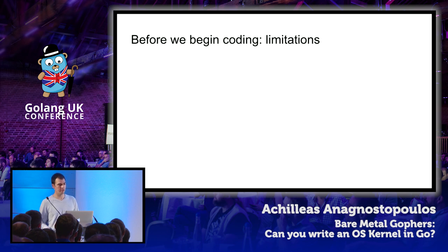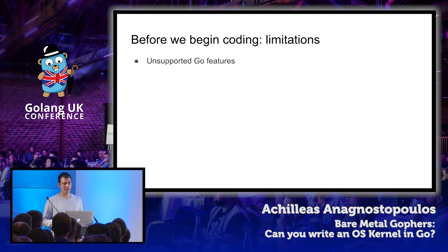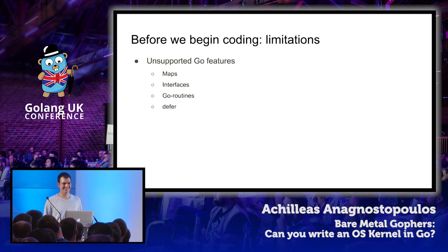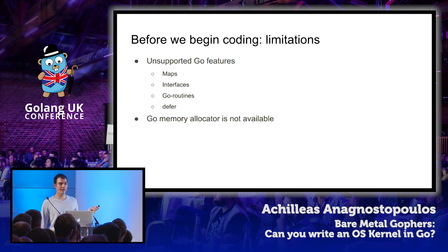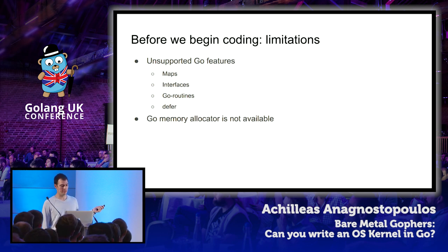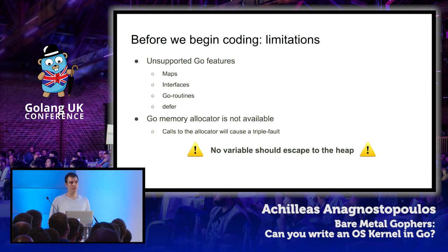Before switching to the editor, some limitations: we cannot use most Go runtime features, including maps, interfaces, goroutines, and calls to defer — for now. The reason is that all of them rely on the Go memory allocator, which has not yet been initialized. Any call to the memory allocator will cause our code to crash, which is exactly why we didn't want the stack growth check trying to grow the stack. When building our code, we need to make sure no variable escapes to the heap; otherwise the Go compiler will emit a call to the memory allocator.